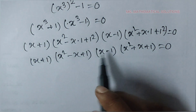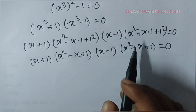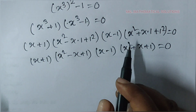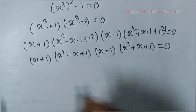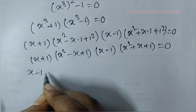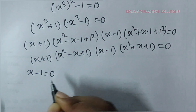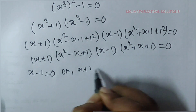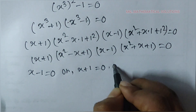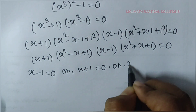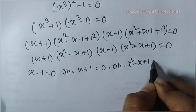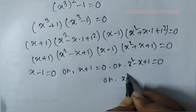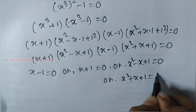The product of 4 terms is 0. That means either one can be 0. So: x - 1 equal to 0, or x + 1 equal to 0, or x² - x + 1 equal to 0, or x² + x + 1 equal to 0.